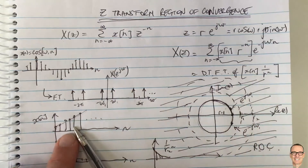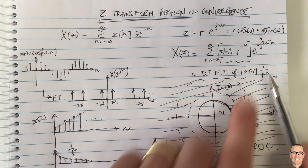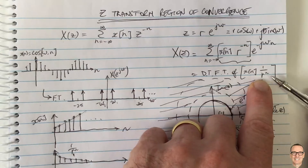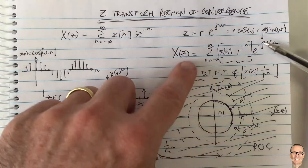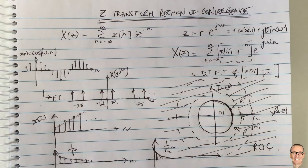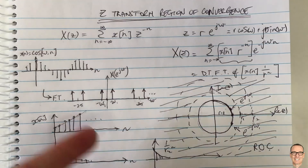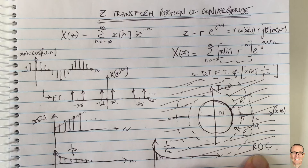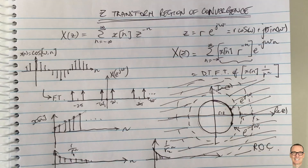So if you have a signal that's unstable with infinite energy, you can't take the Fourier transform directly, but you can take the Z-transform. You multiply by 1/r^n and then take the normal Fourier transform, using all the Fourier transform machinery we know. In this more general case, you use Z-transforms to solve problems and then invert back to get the time-domain signals of interest. That's the relationship between the Z-transform and the Fourier transform, and how it relates to the region of convergence.